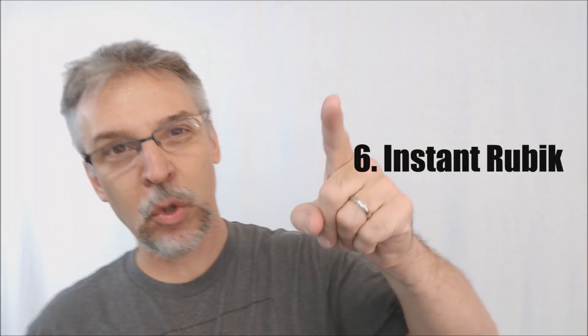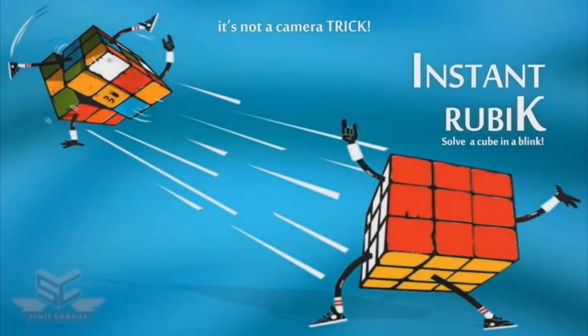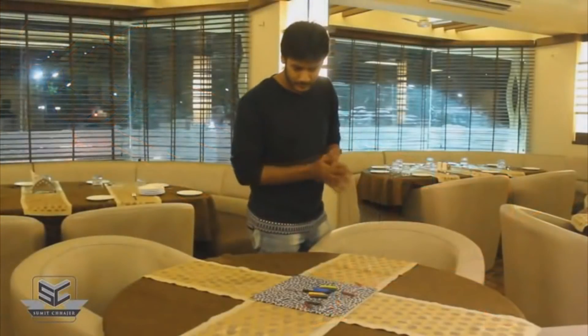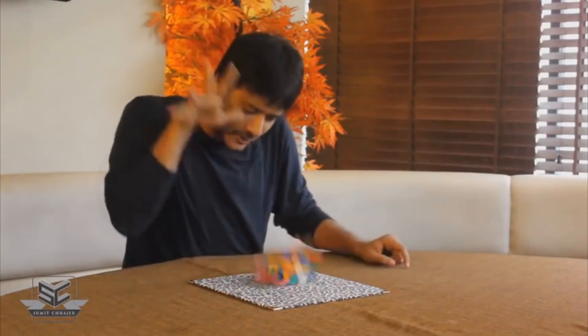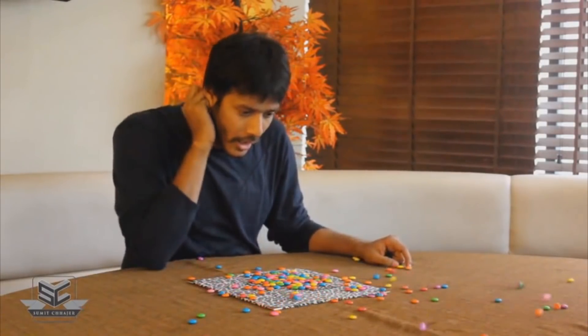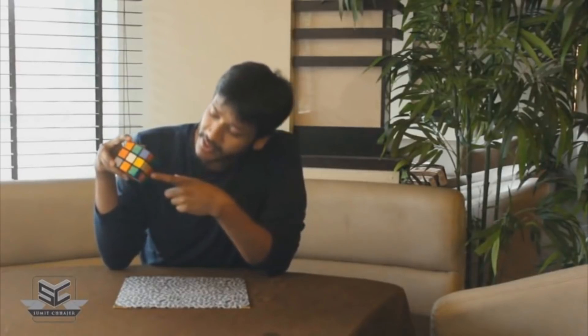Coming in at number six is Instant Rubik from Submit to Hager. This is a flash trick. It is an instant cube solve. Basically what happens is you walk out with an unsolved cube and you can slam it down on the table. And the moment you slam it down, it becomes a solved cube just like that. But that is the routine. You have to do it like that. There's no other way to do it. So this works really great as an opener, but there's not much else you can do with it other than a flash change. So you could also bring out an unsolved cube, smash it to the table, and then it becomes a pile of candy or something else.